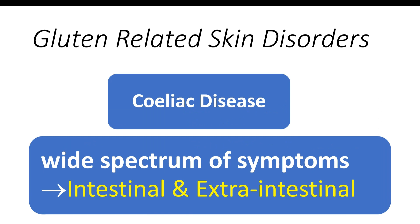Celiac disease is characterized by a wide spectrum of symptoms. Intestinal manifestations include diarrhea, abdominal distension, constipation, and malabsorption. Extra-intestinal symptoms, which can present as a first sign of celiac disease, include weight loss, weakness, anemia, reduced bone mineral density, recurrent aphthous stomatitis, hypertransaminasemia, musculoskeletal pain, spontaneous abortions, epilepsy, peripheral neuropathy, and dermatological lesions, reflecting the systemic nature of the disease.